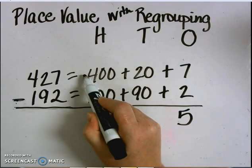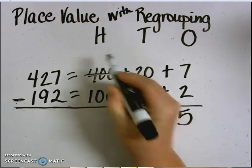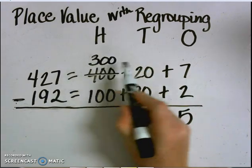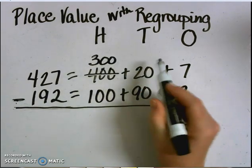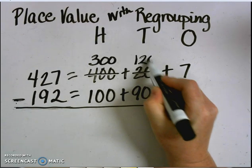I'm going to borrow from the hundreds place. I'm going to take 100 away from the 400, which would make 300. And I'm going to give that 100 to the tens place, which would now make 20 into 120.